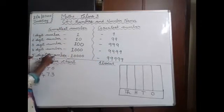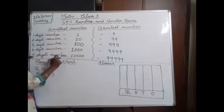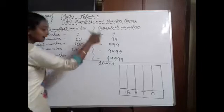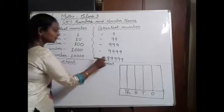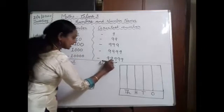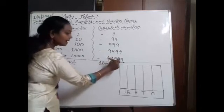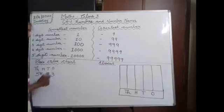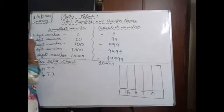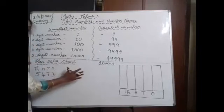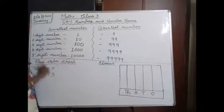Next, the five-digit numbers: the smallest five-digit number is 10,000 and the greatest five-digit number is 99,999. Is it clear? Next, place value.